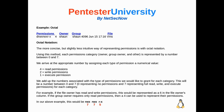For example, if the file owner has read and write permissions, this would be represented as a 6 — because 4 plus 2 equals 6. If the group requires only read permissions, then a 4 is used. Read, write, and execute together would be a 7 — that's 4 plus 2 plus 1. So the group would also be 7. And all others would be 5, which is 4 plus 1 — read and execute equals 5.